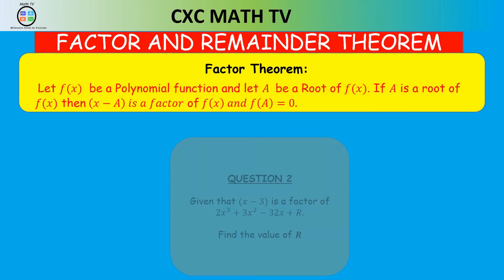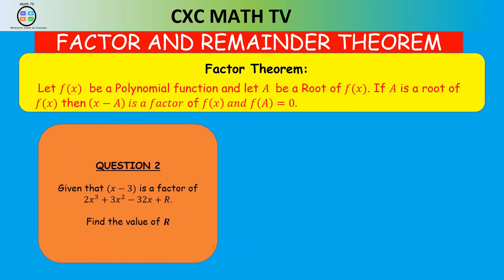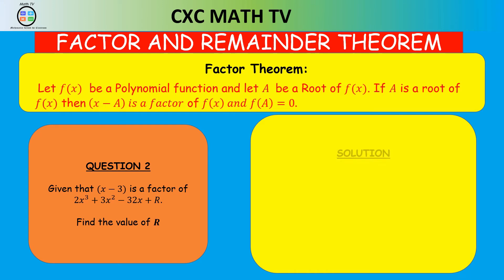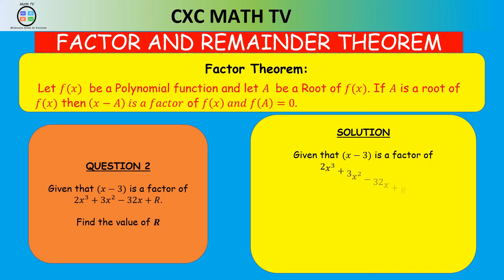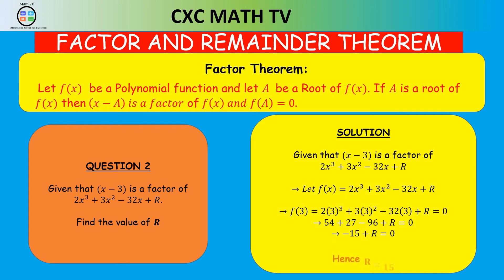Now pause the video and attempt this question: given that x minus 3 is a factor of 2x cubed plus 3x squared minus 32x plus r, find the value of r. Since x minus 3 is a factor, f of 3 equals 0. Inputting x equals 3: 2 times 3 cubed plus 3 times 3 squared minus 32 times 3 plus r equals 0, giving 54 plus 27 minus 96 plus r equals 0, which simplifies to negative 15 plus r equals 0, so r equals 15.